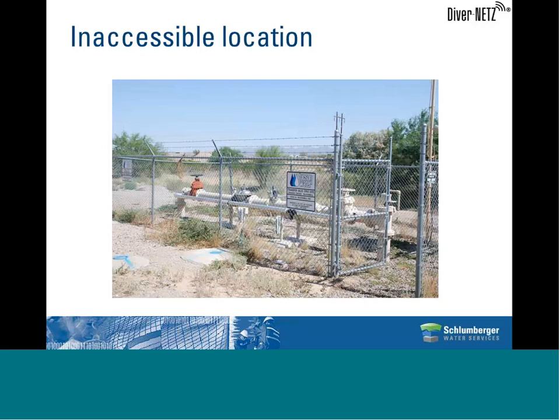This is a different setup but has similar issues—it's hard to get to these locations. The fence is not always open, so to get access to the diver well, which is slightly behind the pipe, you need a key. Tools are also required to open the wells, and there's a lot of other equipment around that you don't want to interfere with. Using the DiverNet system in such a case saves you time and you won't disturb the existing system.